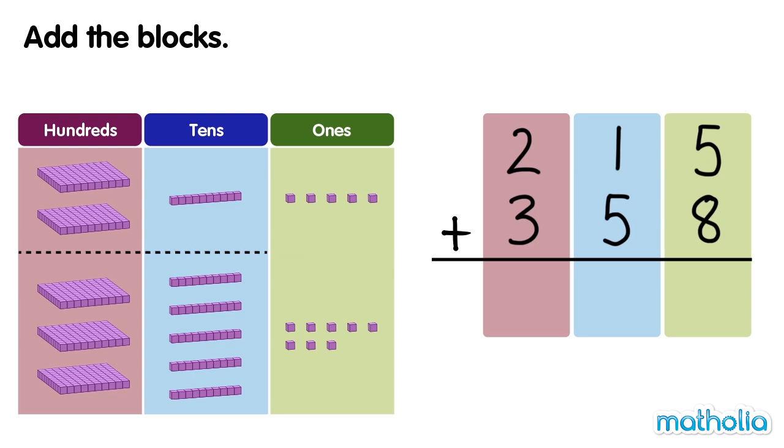Let's start by adding the ones. 5 ones plus 8 ones equals 13 ones. We can regroup 10 ones into 1 ten. Now we have 3 ones and 1 ten.